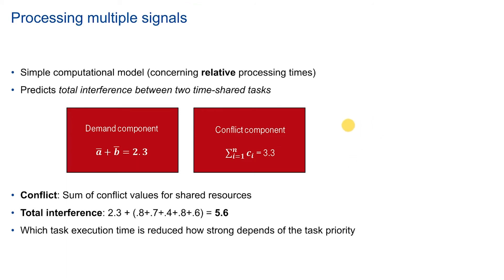So the final interference between the two tasks is the already calculated demand component of 2.3 and the sum of these conflicts that we identified from the matrix. This would be then resulting in a sum of 5.6. This is an arbitrary number and it gives us relative information on the tempo and the duration of these two tasks that can be completed. These numbers are used to predict and model durations of dual tasks compared to other dual tasks and compared to single tasks, so this means doing the single task individually.